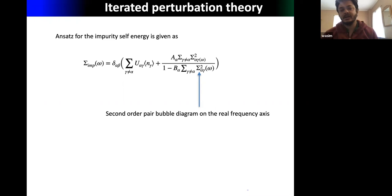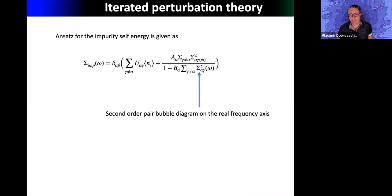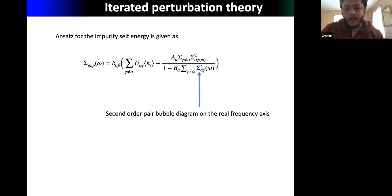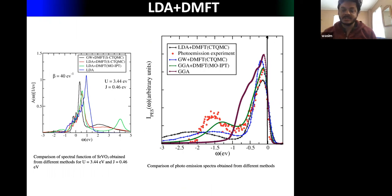The discussion continues on going beyond the density-density interaction and multi-orbital IPT. Results are shown for a three-orbital calculation — six by six with spin — though for systems beyond three orbitals, problems were encountered.